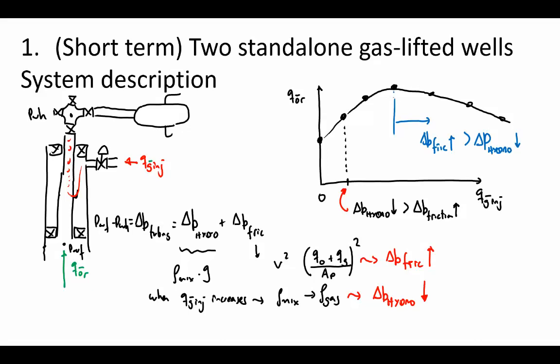This peak is where we want to operate. In terms of optimization, we want to produce the maximum oil rate and find the corresponding optimal gas injection rate, q_gas_injection*. That setting is what we are looking for.